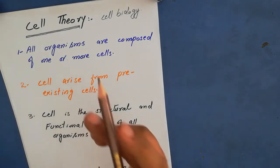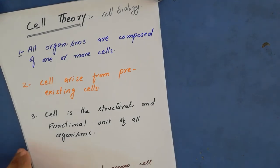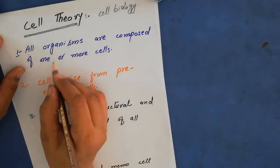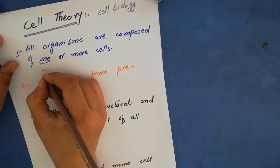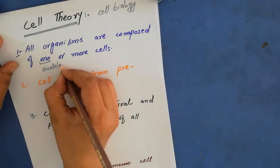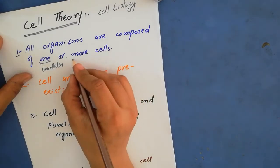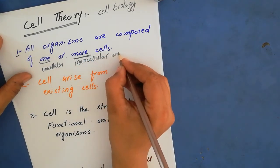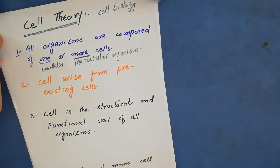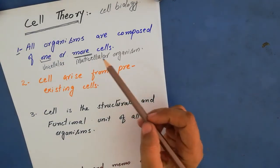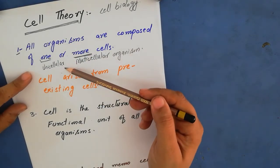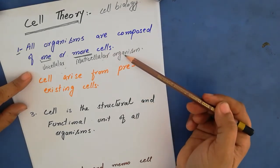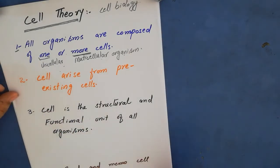First postulate: all organisms are composed of one or more cells. If an organism is made up of one cell, it is called a unicellular organism. If it is made up of more than one cell, it is called a multicellular organism. So all living things are composed of one or more cells.